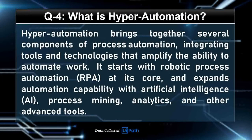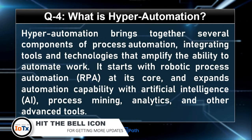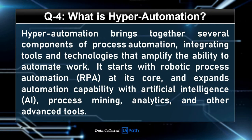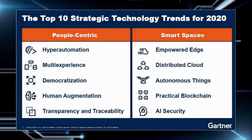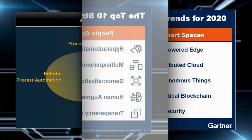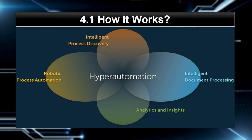Question number 4, and an important topic of the existing world: What is Hyper-Automation? Hyper-automation brings together several components of process automation, integrating tools and technologies that amplify the ability to automate work. It starts with Robotic Process Automation (RPA) at its core, and expands automation capability with artificial intelligence, process mining, analytics, and other advanced tools. Hyper-automation is the top technology trend for 2020 according to top strategic technology trends, and the video also covers how the hyper-automation process works.